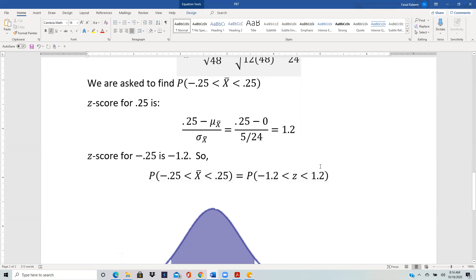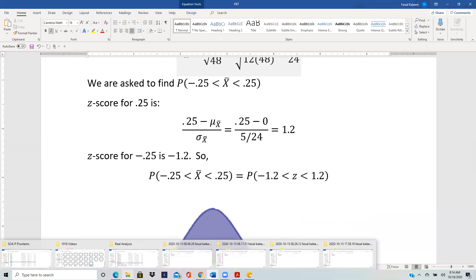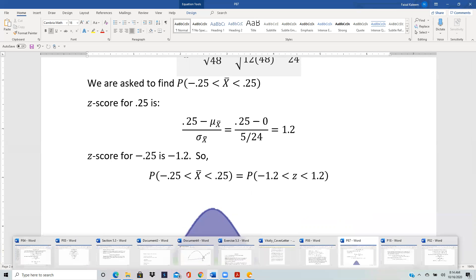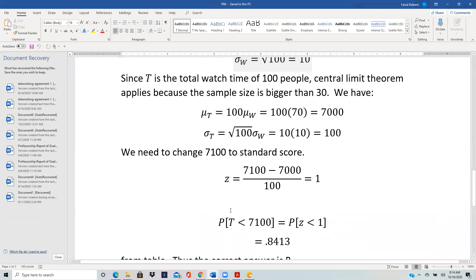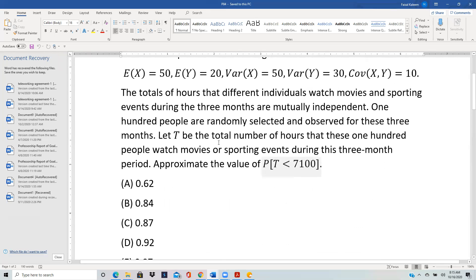I want to make a remark about continuity correction. Earlier I was saying that if the numbers involved are too big, it doesn't matter whether we use continuity correction or not. But the problem I was using to illustrate that was problem 84, and there continuity correction didn't apply because T was the total number of hours, and time is a continuous variable itself. So there it makes no sense to talk about continuity correction at all.